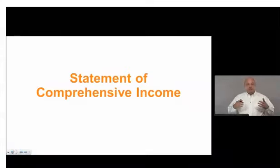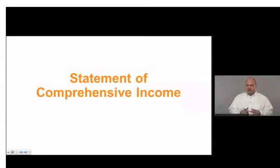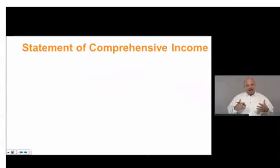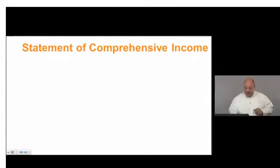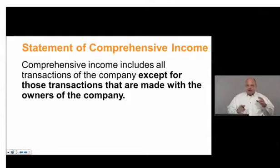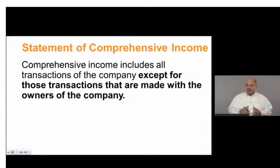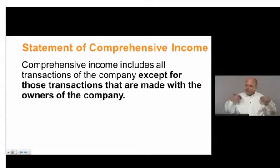The statement of comprehensive income is a fourth financial statement — not one of the main financial statements, but we need to know what it is and what it is showing us. GAAP requires that a company show its comprehensive income, which is potentially a little bit different than the net income for the company. Comprehensive income includes all of the transactions that the company entered into during the period, except for transactions made with the owners of the company.